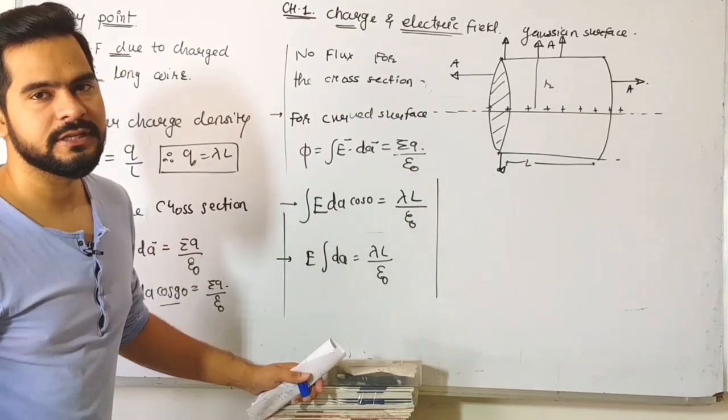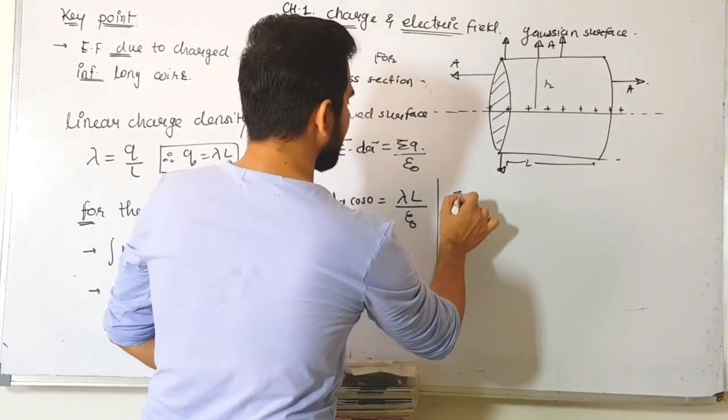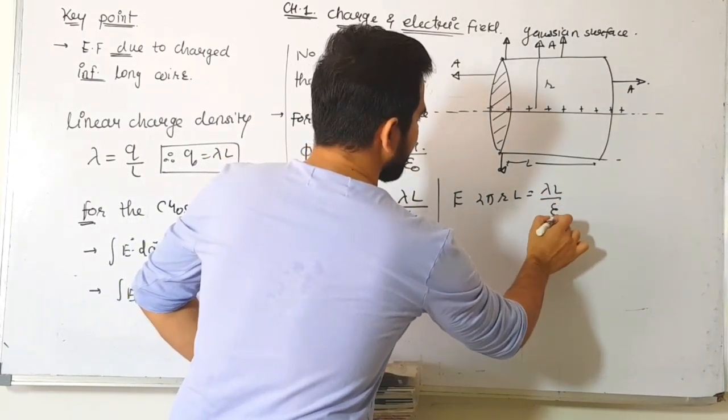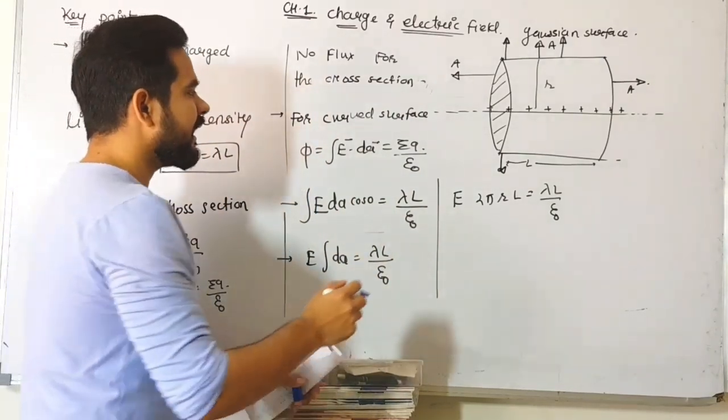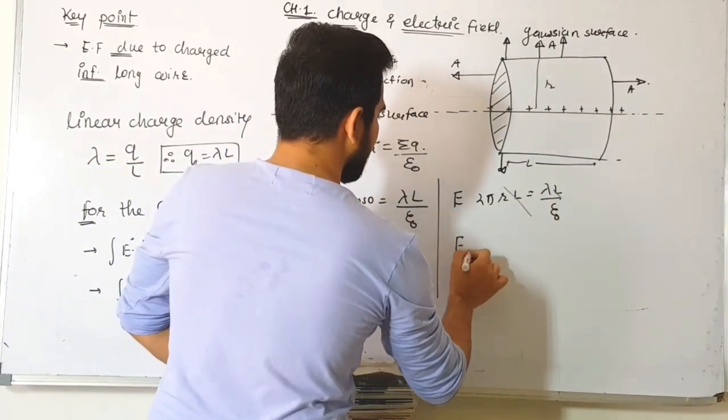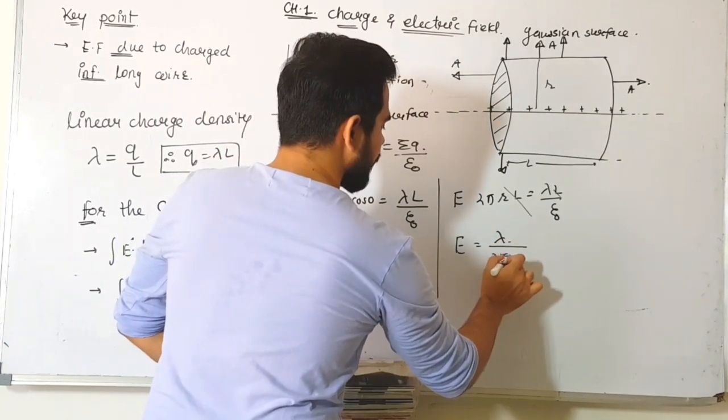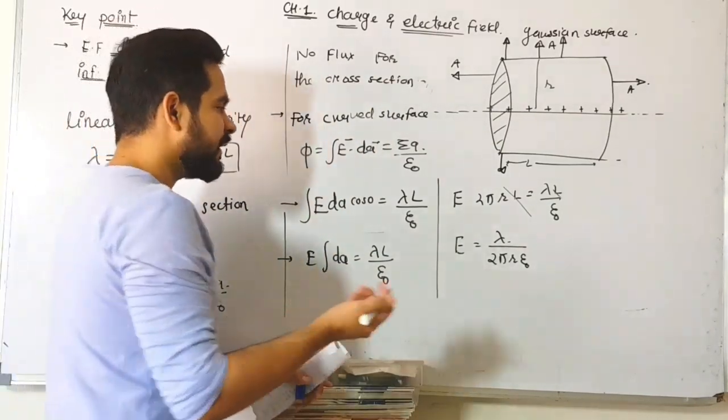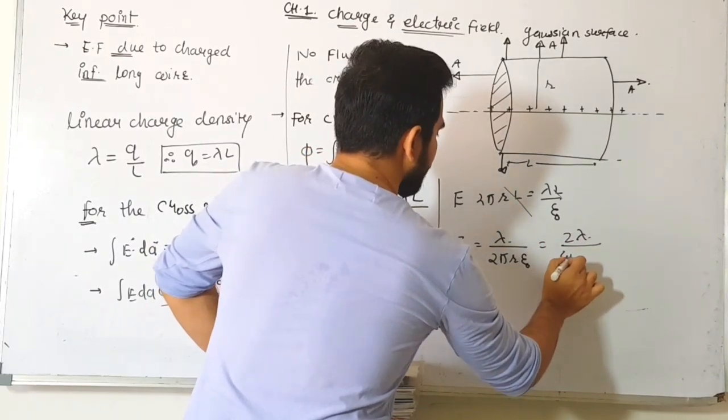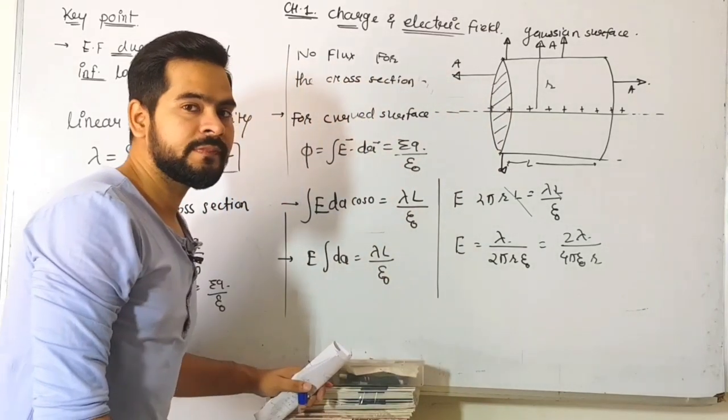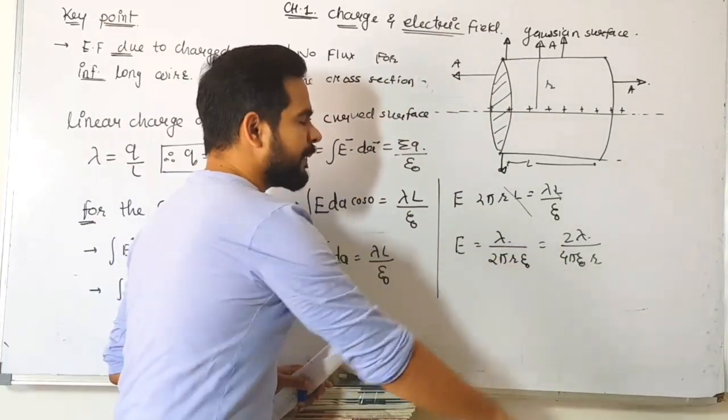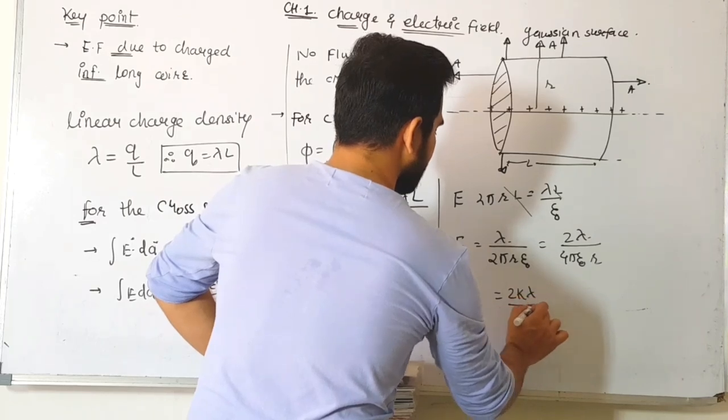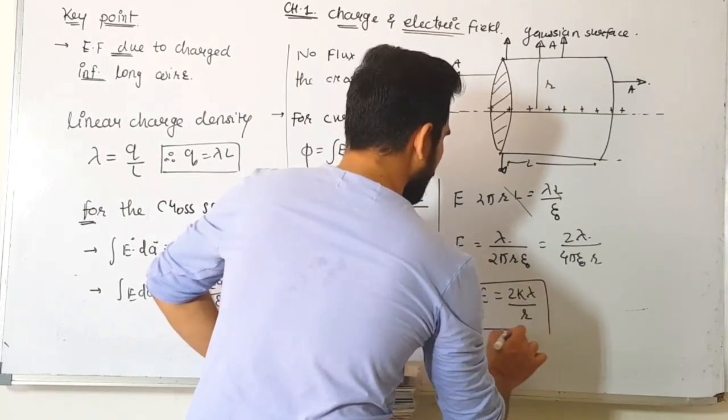For the cylindrical Gaussian surface, ∫dA equals the curved surface area = 2πrl. So E × 2πrl = λl/ε₀. The l cancels out. Electric field E = λ/(2πrε₀).